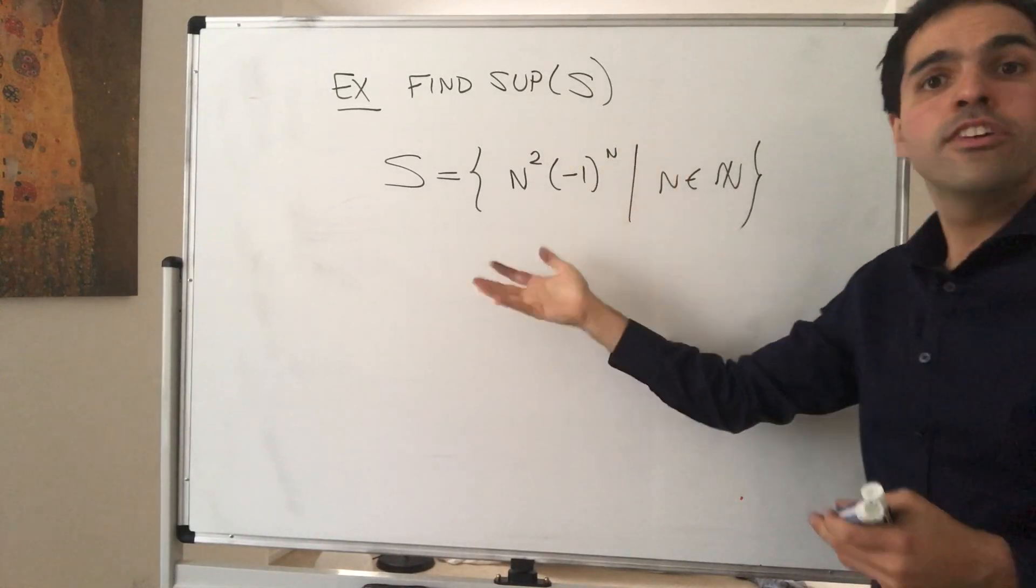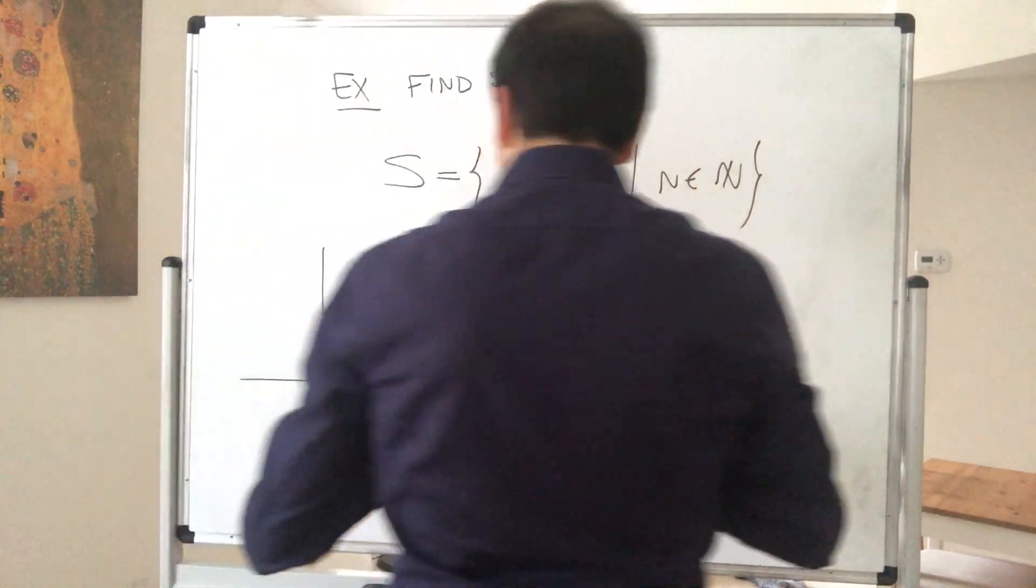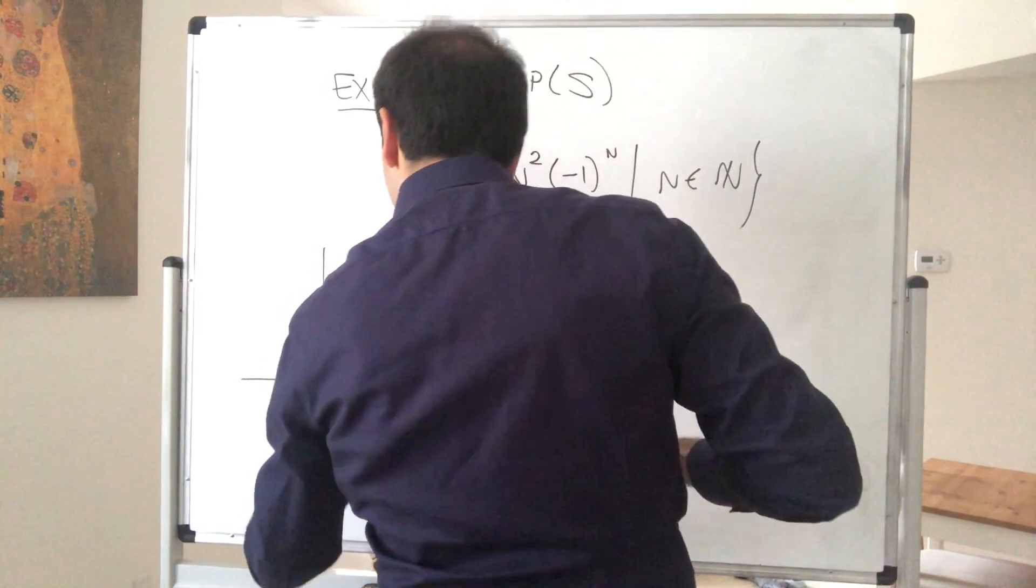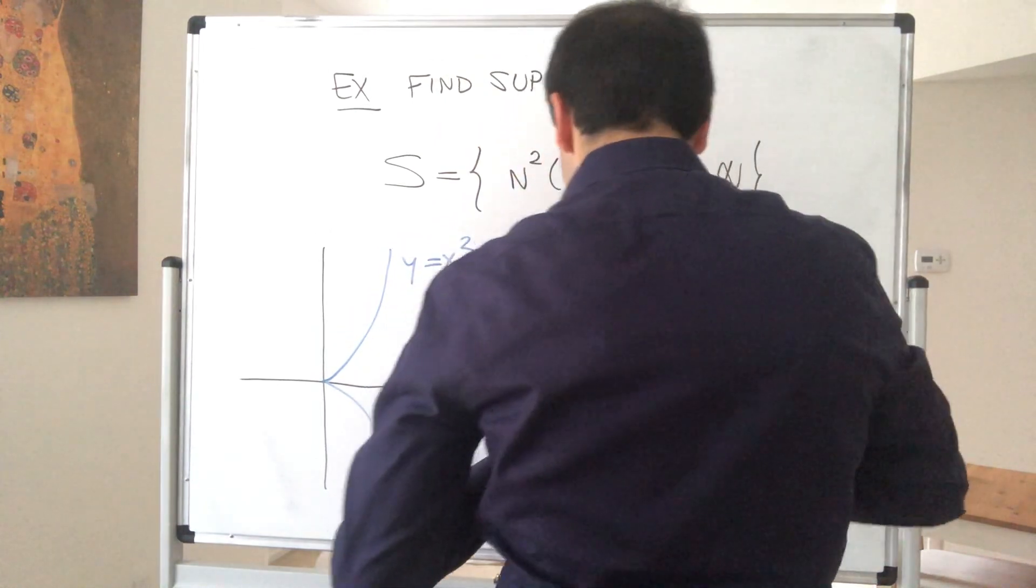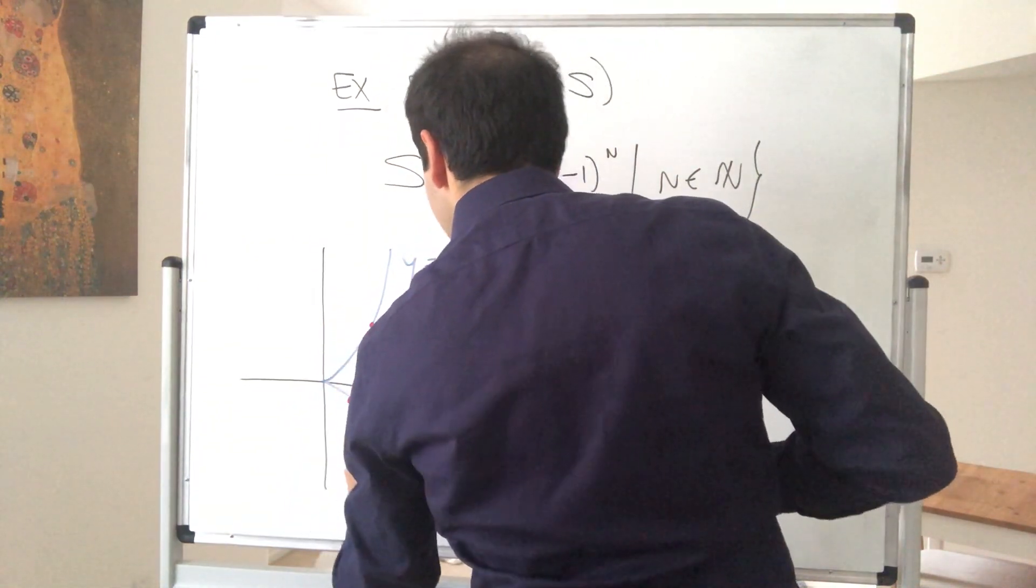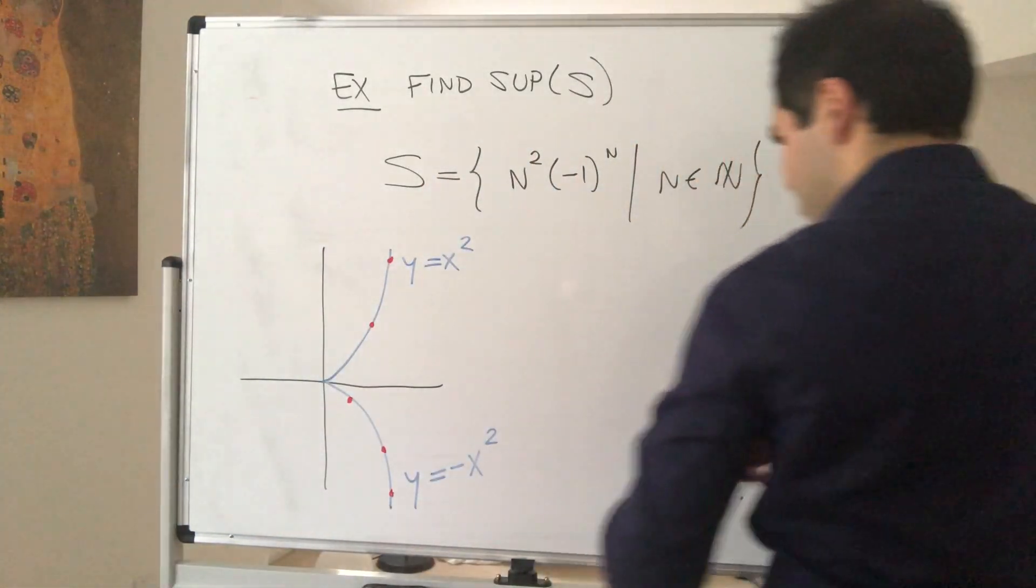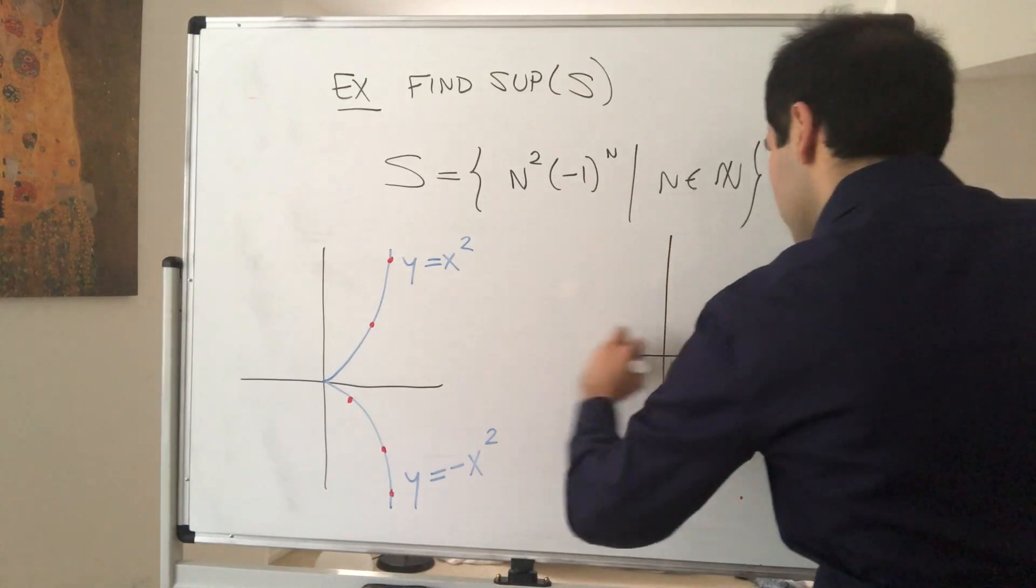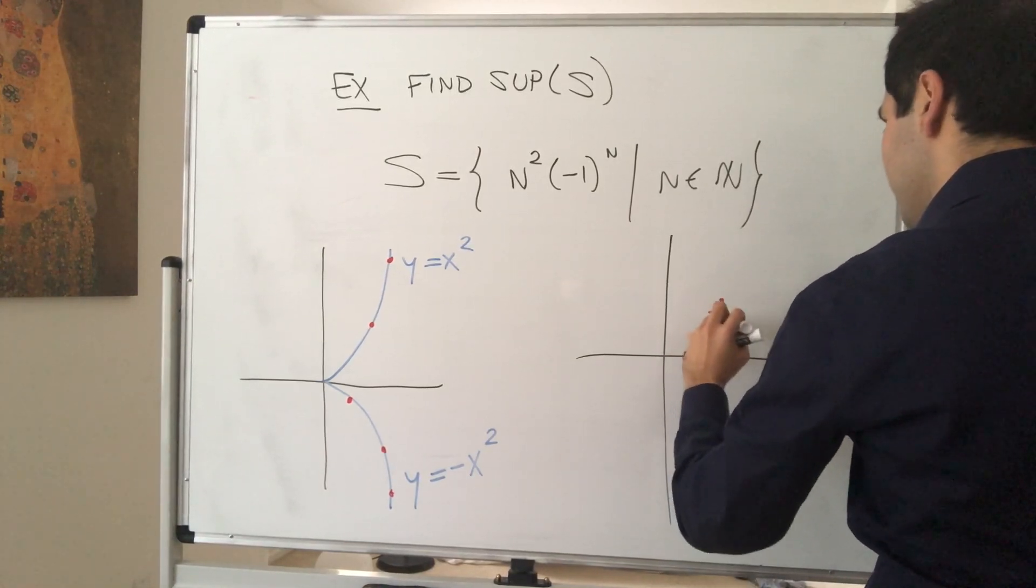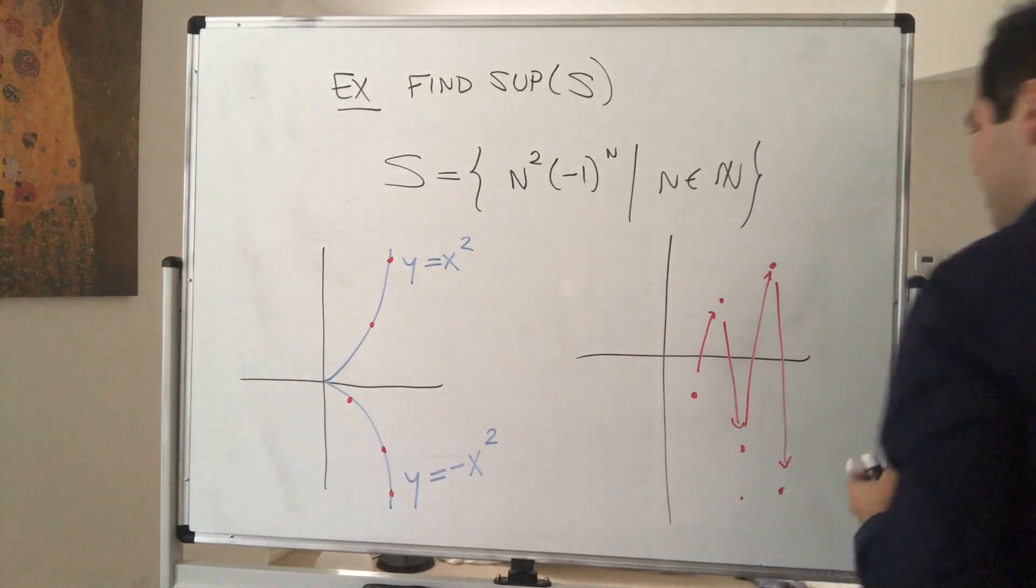Notice minus 1 to the n is either minus 1 or 1. So essentially, this sequence sort of travels on two parabolas, one being y equals x squared, and the other one y equals negative x squared. So in particular, the first point minus 1 is here, the second point 4 is here, and then minus 9, 16, minus 25, etc. So in other words, S looks as follows. Again, it starts at minus 1, and then it goes to 4, again like this, and then it goes to minus 9, and then it goes to 16, and then minus 25, etc.